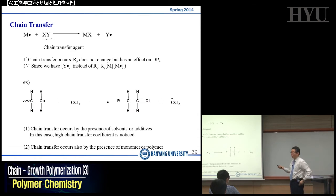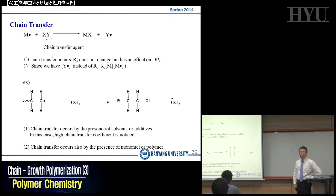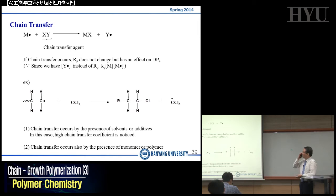It will not affect the total radical polymerization but may affect the DPN because the presence of XY will terminate the species. This will affect the degree of polymerization but does not affect the RP. Chain transfer occurs in many cases — when you have a solvent or any chain transfer agents, this will be called an additive, and in this case we have a very high chain transfer coefficient, which will be defined in the next slide.